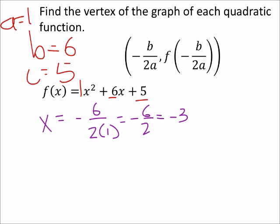So in my ordered pair, I can replace the x with negative 3. Then to find the y value, all I've got to do is go into the original equation and replace all my x's with the x value, which is negative 3.